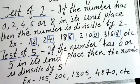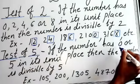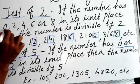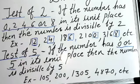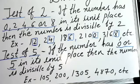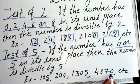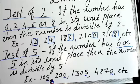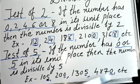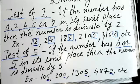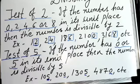Next, the test of five: if the number has 0 or 5 in its unit place, then the number is divisible by five. The table of five is easy to learn. In this case, only two options exist — if zero or five is in the unit place, that number is divisible by five. For example: 105, 200, 1305, and 4870 are all divisible by five.